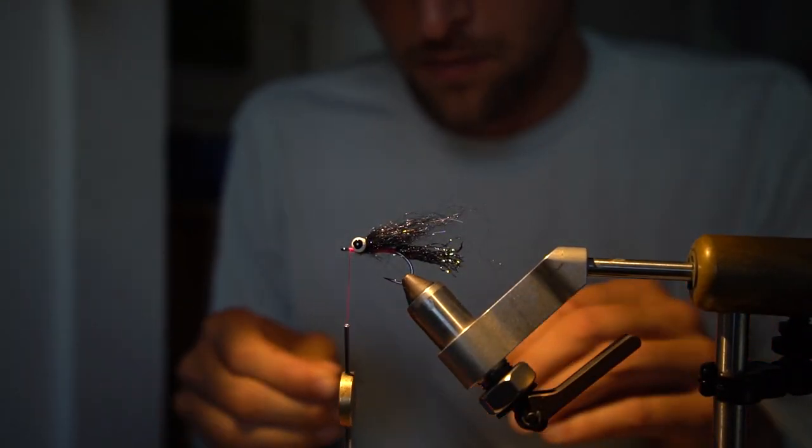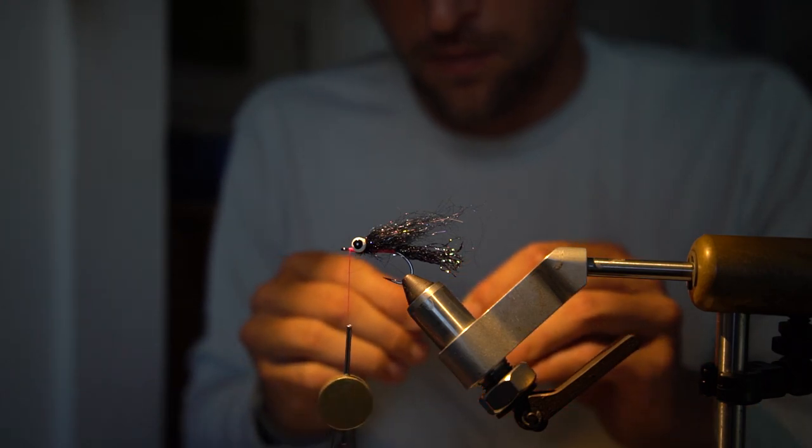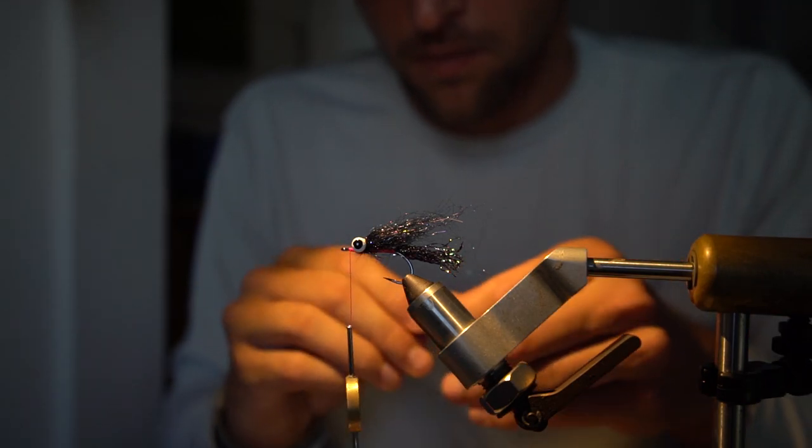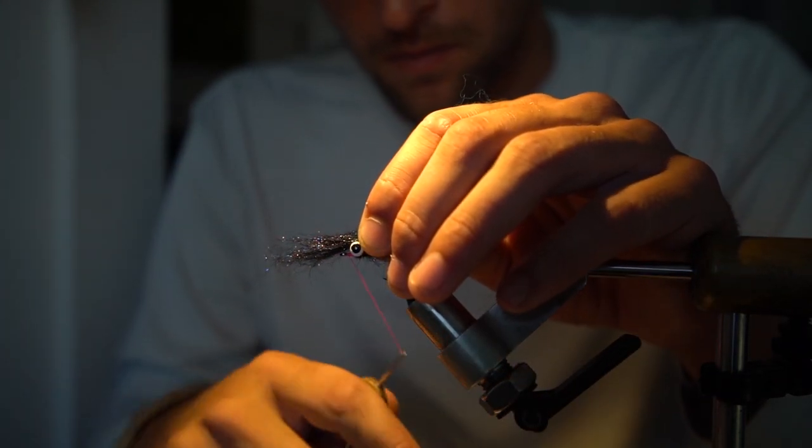After I get that piece tied in I'm going to advance my thread to in front of the lead eyes and I'm going to tie in another clump of the fusion dub about the same thickness and same style kind of half and half.